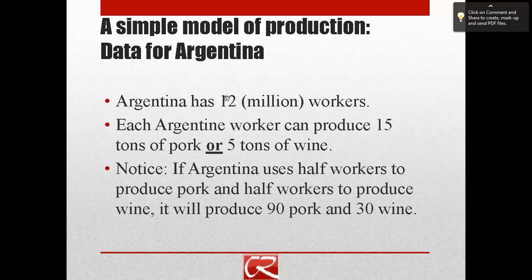They're going to take half of their 12 million workers — so six workers — and each produces 15 pork. That gets us 90 pork. Then they're going to take the other half of their 12 workers and have them produce five wine each, and that gets us to 30 wine.